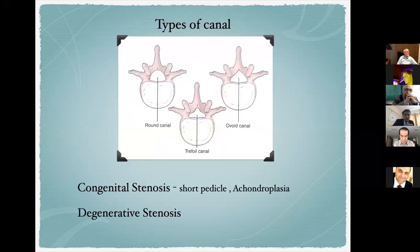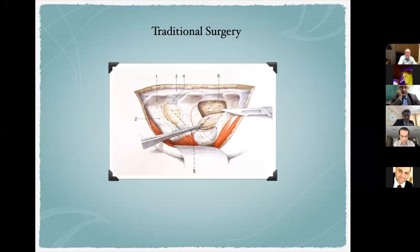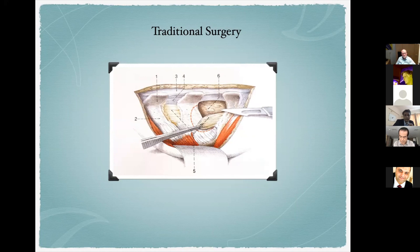We are not dealing here with congenital stenosis — such as trifoil or short canals due to short pedicles or achondroplasia — but with degenerative stenosis. The traditional surgery uses the interlaminar approach, as shown in these surgical atlas images, where we approach the central canal by removing the ligamentum flavum, stripping muscles, removing interspinous ligaments, performing a laminotomy, and sometimes even facetectomy to reach the canal.